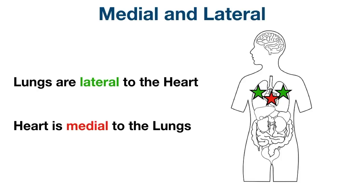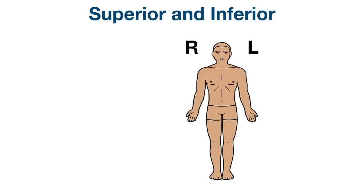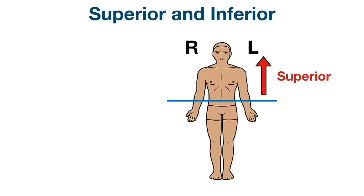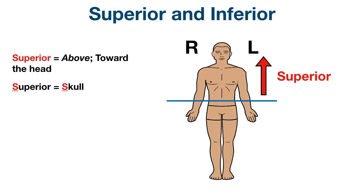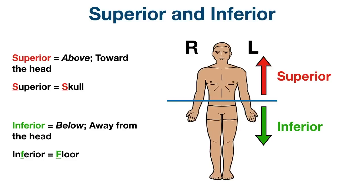The next pair of directional terms is superior and inferior. We're going to divide the body into upper and lower portions using a transverse plane. The transverse plane runs horizontally and divides the body into upper and lower sections. If we move toward the head, then we're moving superior. Superior is defined as above or toward the head — think of superior and skull because they both start with the letter S. If we move away from the head, then we're moving inferior. Inferior is defined as below or away from the head — use the F in inferior to think of floor.